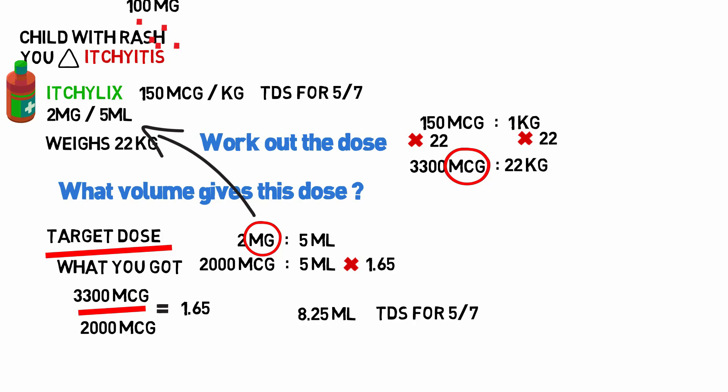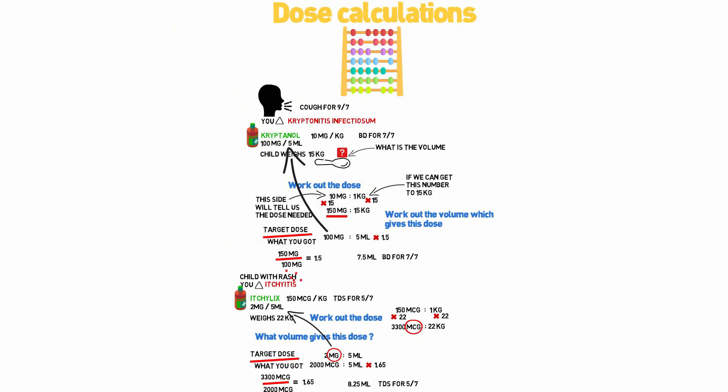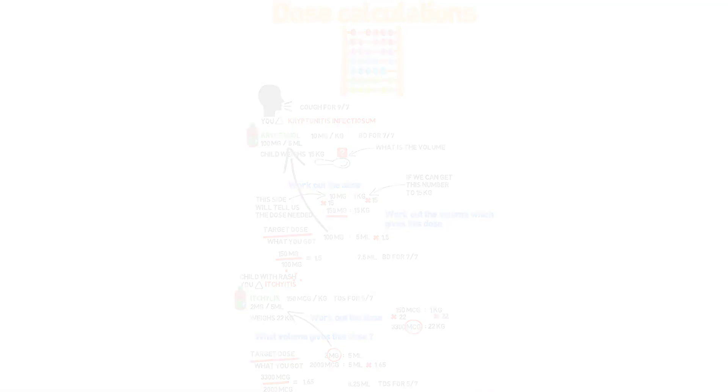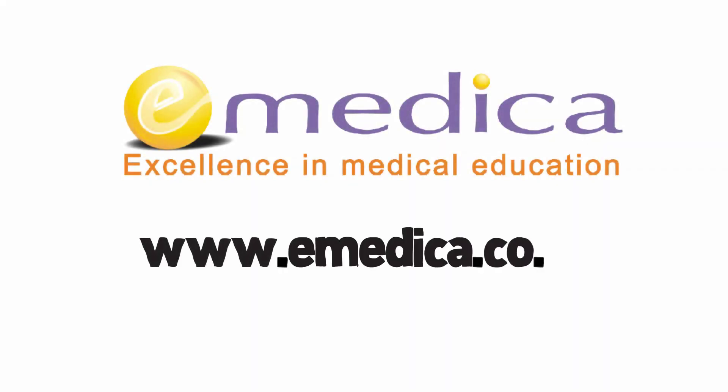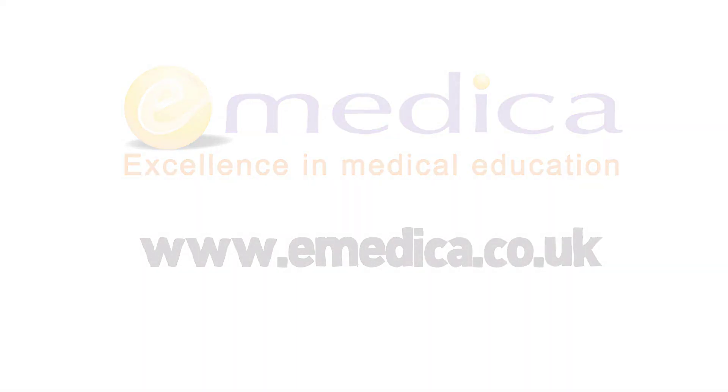So 8.25 mils provides the 3,300 micrograms needed for a 22 kilogram child. And you're going to give it TDS for five days.